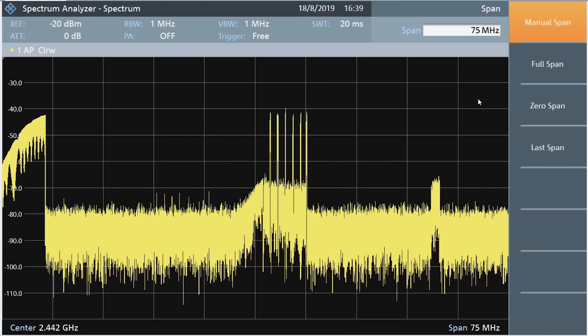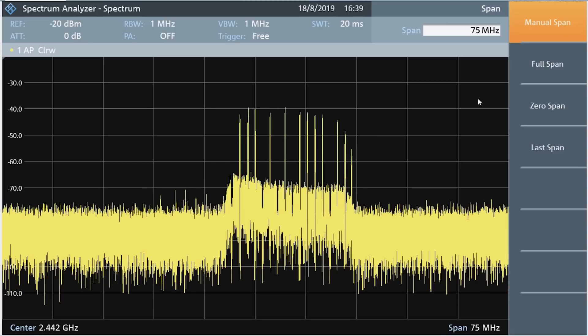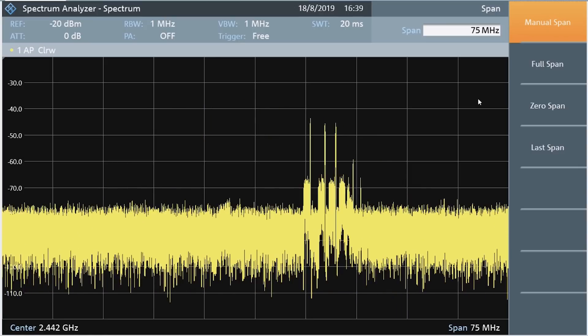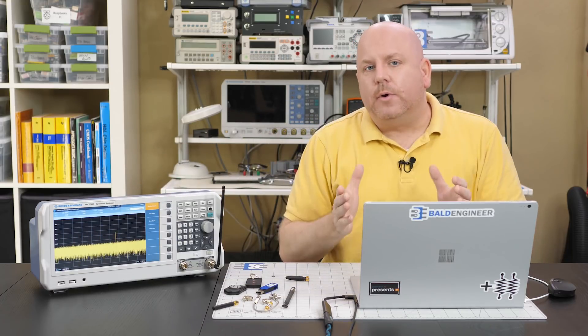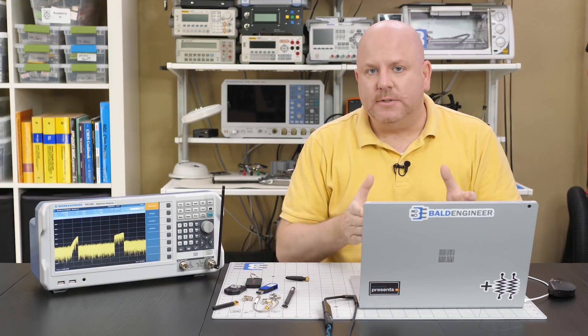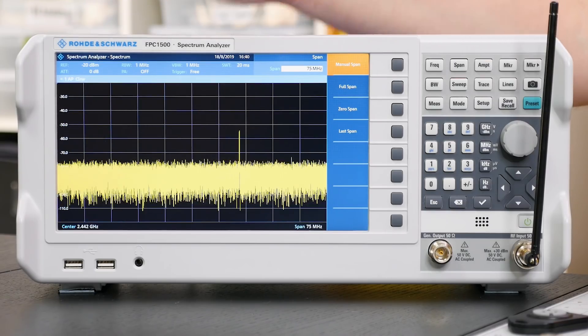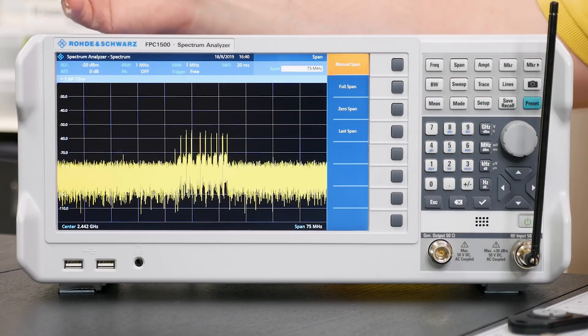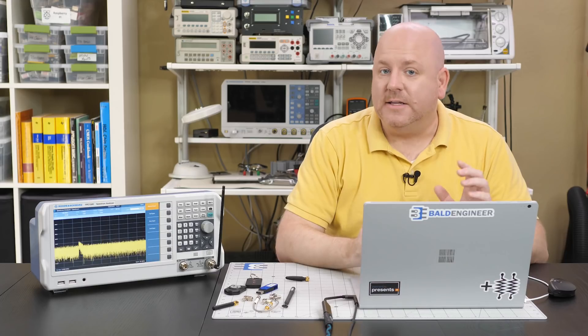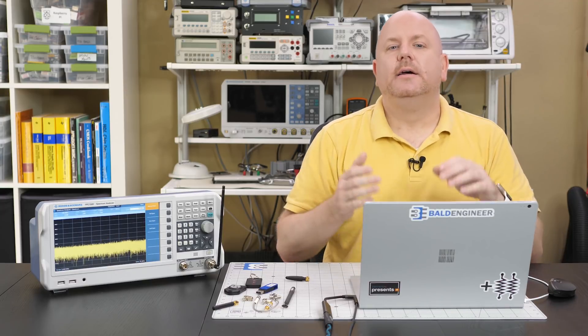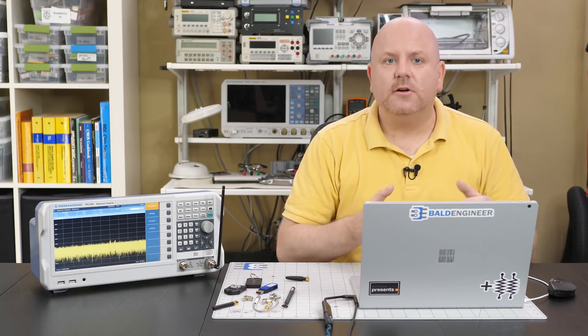Now we are looking at 2.442 GHz or Wi-Fi channel 7 with a span of about 75 MHz. That roughly covers channels 1 through 14. Wi-Fi uses frequency hopping, which we can actually see happening now with all these pulses showing up. Remember, a spectrum analyzer sweeps across frequency. It can only measure one specific frequency at a time. So when we had the full span at 3 GHz, we are missing frequency hops as the analyzer scanned by. By zooming in, we increased the chance to capture activity.